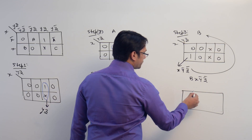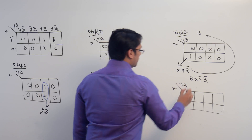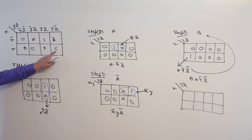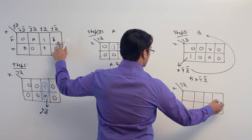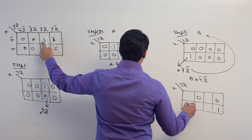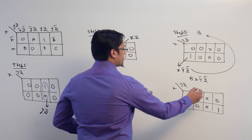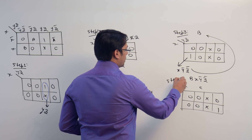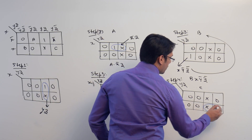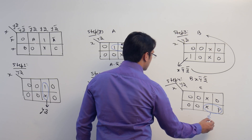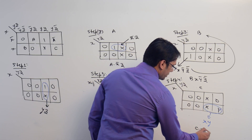Now take the next variable — the only one left is c. Take c as one, keep other variables as zero, and keep the ones as don't care. This gives don't care, zero, and zero. Try to make a subcube. The subcube we can get is representing x, y, so the SOP expression for this will be c dot x dot y.